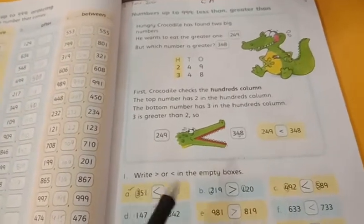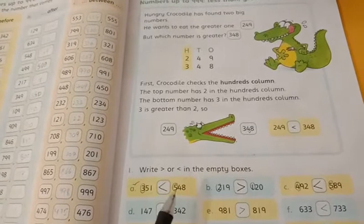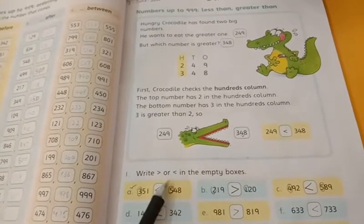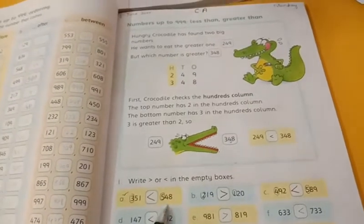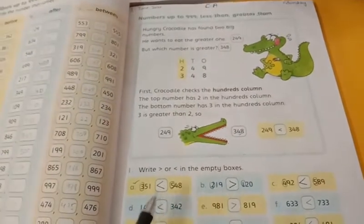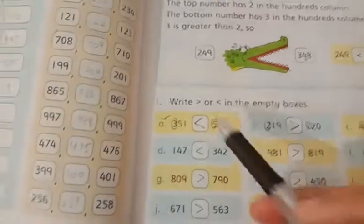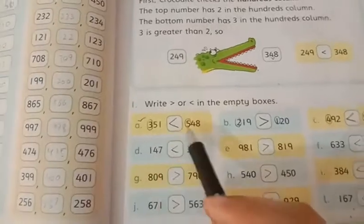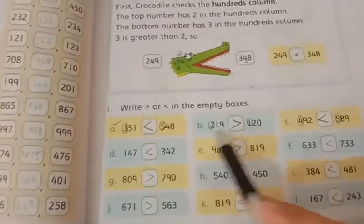Next crocodile face empty box, you have to use greater or less symbol. If you want to use the number, 548 you have to see hundreds. Here is a 3, here is a 5, here is a 2, here is a 1.